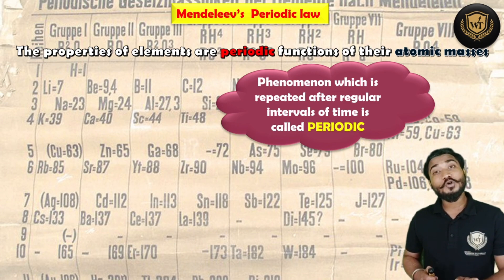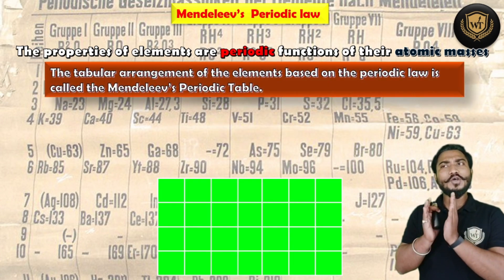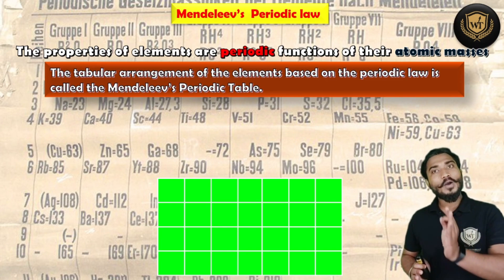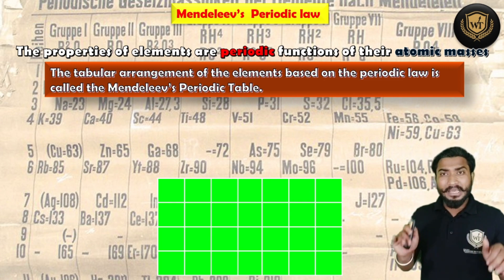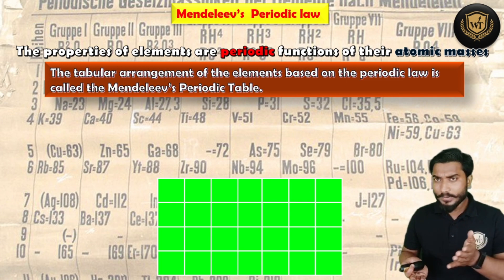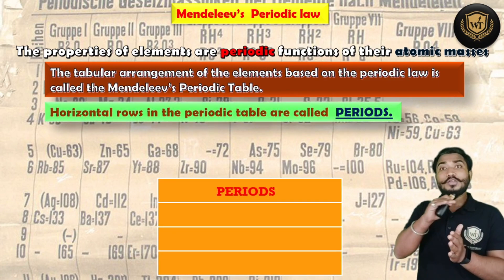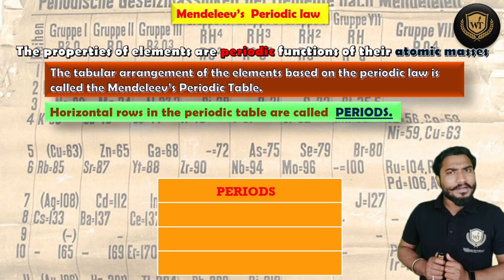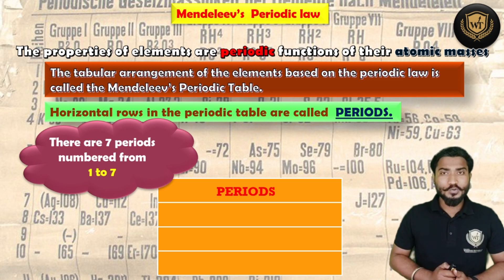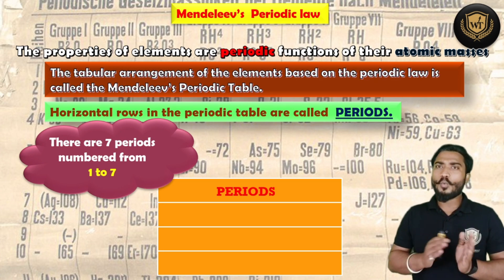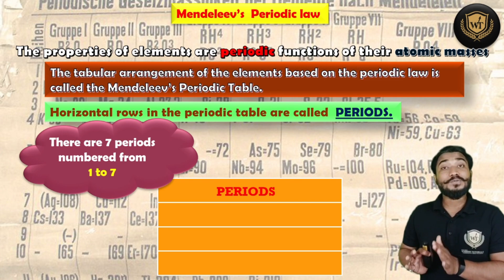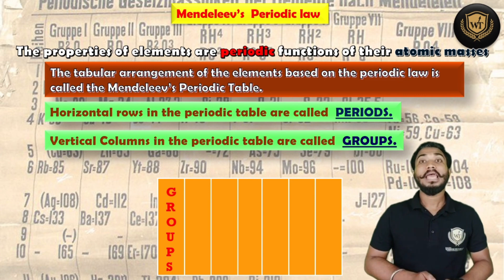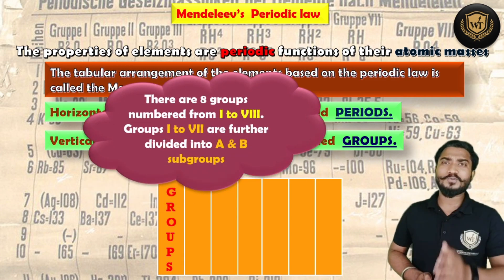In Mendeleev's table, what was repeating was the properties of elements — they were repeated after certain intervals of atomic masses. Based on this arrangement he created a table called Mendeleev's Periodic Table. Since there is a table, there are rows and columns. In his table, the horizontal rows are termed as periods. There were total 7 horizontal rows, numbered from 1 to 7. The vertical arrangements were termed as groups, and there were total 8 groups.